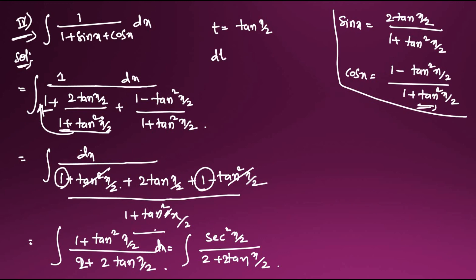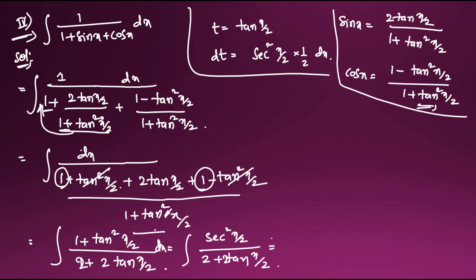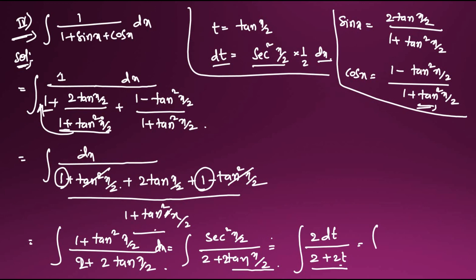Now let t = tan(x/2), so dt = sec²(x/2)·(1/2) dx, meaning sec²(x/2) dx = 2 dt. Substituting: integral of 2dt / (2(1 + t)) = integral of dt/(1 + t).